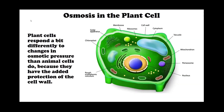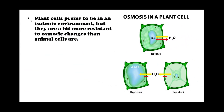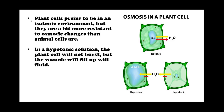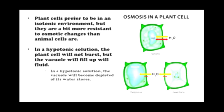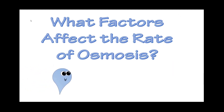Plant cells respond a bit differently to changes in osmotic pressure than animal cells do, because they have the added protection of the cell wall. Plant cells prefer an isotonic environment but are more resilient to osmotic changes than animal cells. In a hypotonic solution, the plant cell will not burst; instead, the vacuole will fill up with fluid. In a hypertonic solution, the vacuole will become depleted of its water stores.